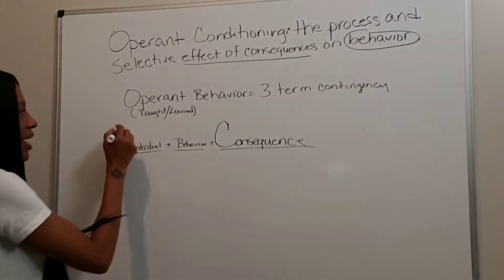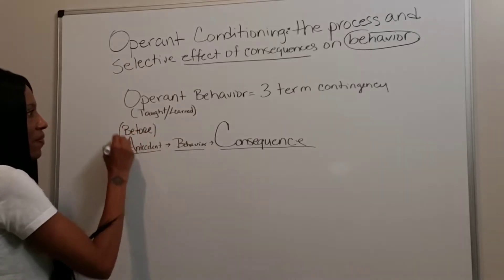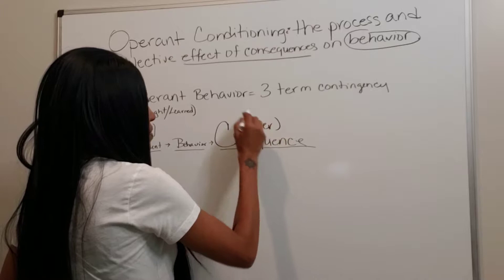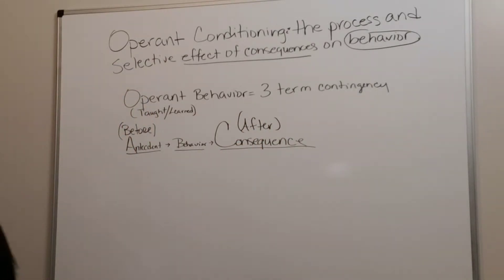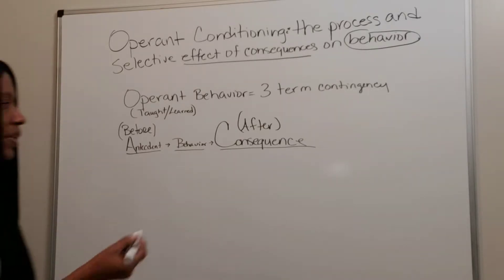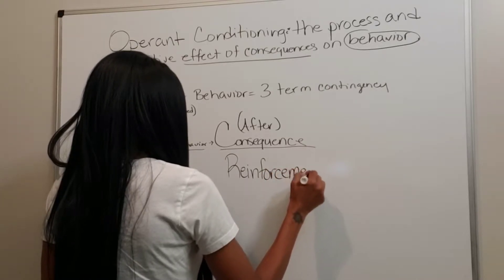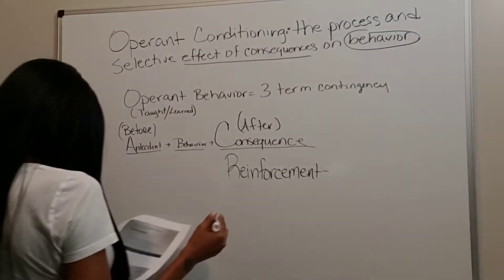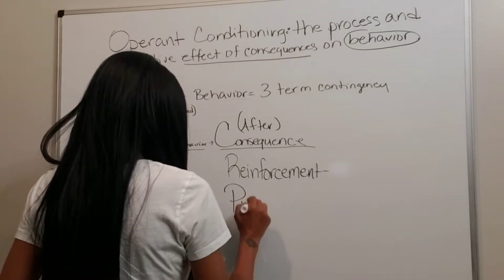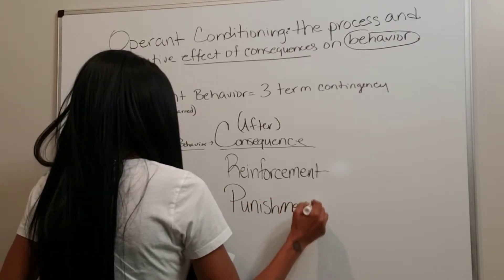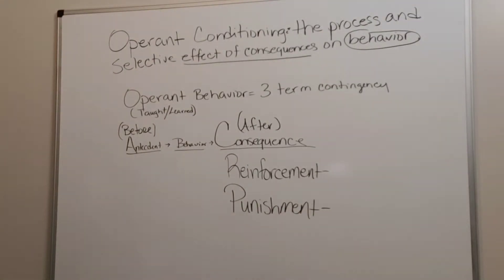With operant behavior, you're learning from whatever the consequence is after the behavior. The antecedent stimuli comes before the behavior and the consequence happens after the behavior. So in order for an individual to learn, there are two other terms we're going to come into contact with. We're going to talk about reinforcement, which we've touched on a little bit already, and we also have an operant condition called punishment.